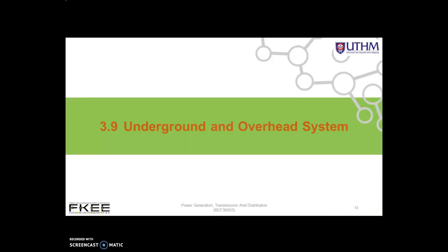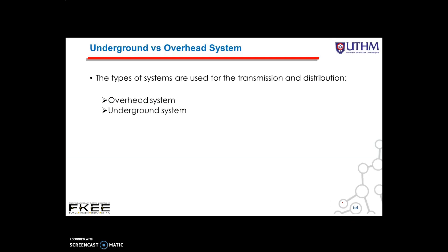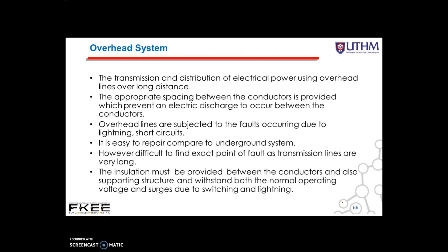Next is underground and overhead systems. The distribution system can be overhead or underground. Overhead lines are generally mounted on wooden, concrete, or steel poles which are arranged to carry distribution transformers in addition to conductors. For the underground system, it normally uses conduits, cables, and manholes under the surface of the street and sidewalks. The transmission and distribution of electrical power using overhead lines covers long distances, and appropriate spacing between conductors is provided to prevent electric discharge between them.